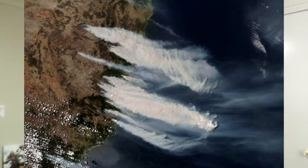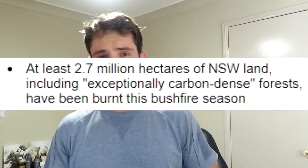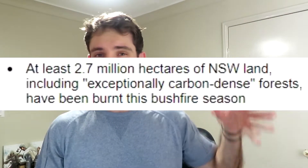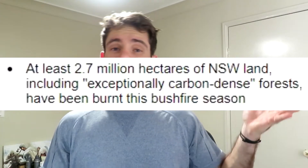These bushfires are still ravaging — still plaguing the lands of East Coast Australia, mainly seen in New South Wales. Currently, there have been approximately 2.7 million hectares of land burnt or scorched.